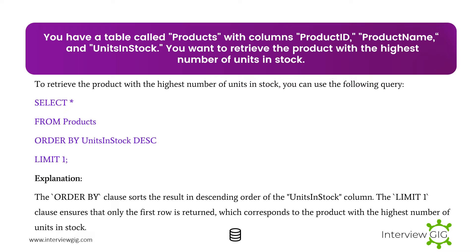Next Scenario: You have a table called Products with columns Product ID, Product Name, and Units in Stock. You want to retrieve the product with the highest number of units in stock. To do this, you can use the following query. The ORDER BY clause sorts the result in descending order of the Units in Stock column, and the LIMIT 1 clause ensures that only the first row is returned, corresponding to the product with the highest units in stock.